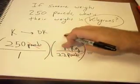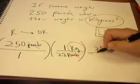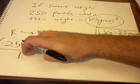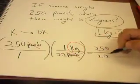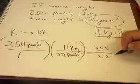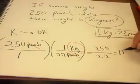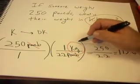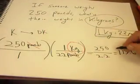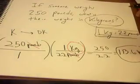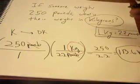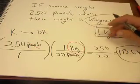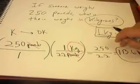So I've got 250 times 1 equals 250, and 1 times 2.2 equals 2.2. That gives me 250 divided by 2.2, which is approximately 113.6. The only units left are kilograms, which is what we needed. So the answer is 113.6 kilograms — rounded to the nearest tenth. You'll need to check whatever particular problem you're working with to know what to round to.